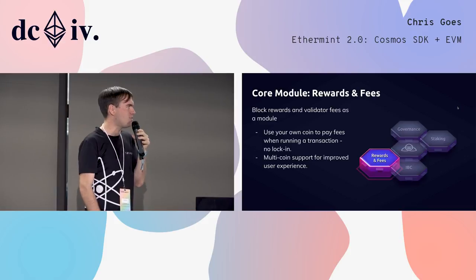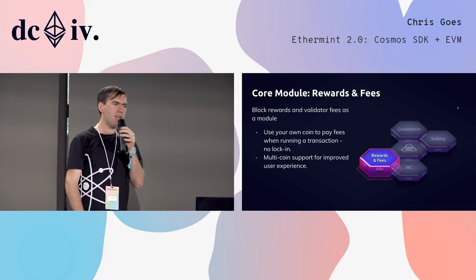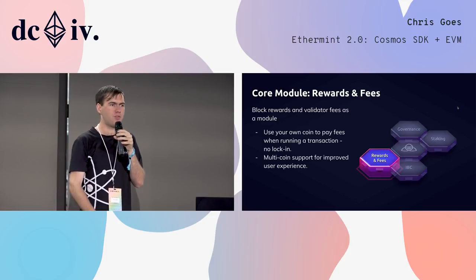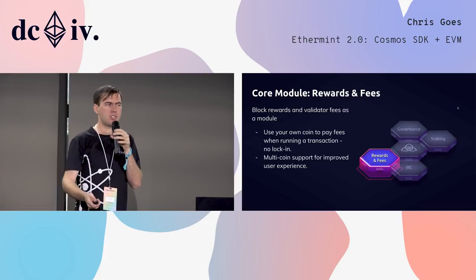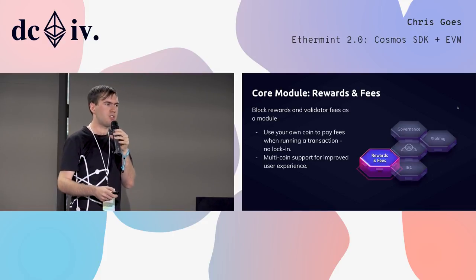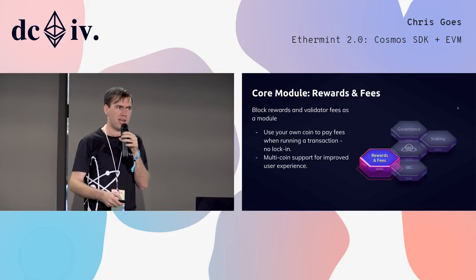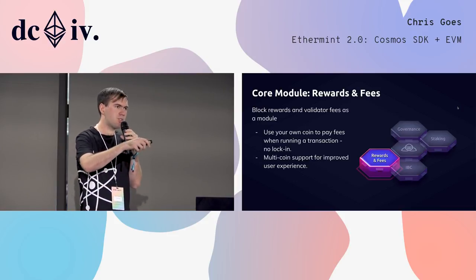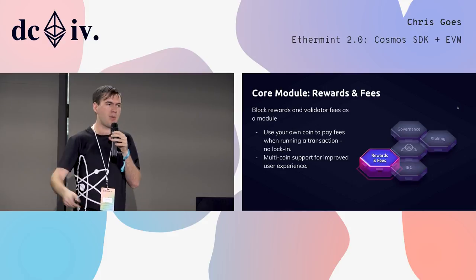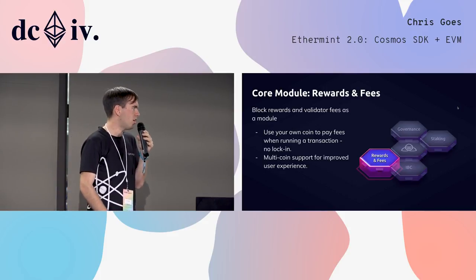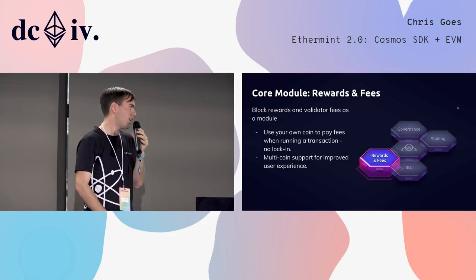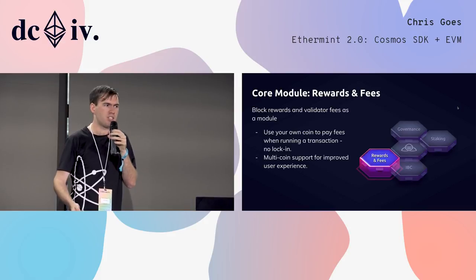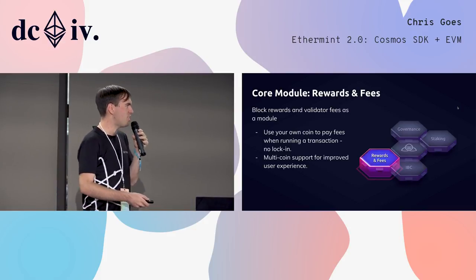Next up on the list of core modules is fee distribution — rewards and fees. We've decided we need to use a pretty different system for fee distribution for Tendermint than for most existing blockchains. We can't just give all the fees to the proposer because it would make it too much of an incentive to bias proposer election or DOS the current elected proposer. So we distribute most rewards proportionally to stake held by all the delegators and validators on the blockchain. Like the staking and governance modules, our fee distribution module supports any token — easy peasy, just change one string — and it also supports multi-coin fees.